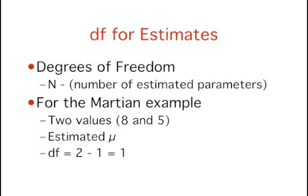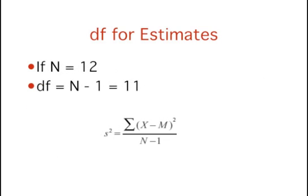In general, the degrees of freedom for an estimate is equal to the number of values minus the number of parameters estimated on the way to the estimate in question. In the Martians example, there are two values, 8 and 5, and we had to estimate one parameter, the population mean mu, on the way to estimating the population variance. Therefore, the estimate of variance has 2 minus 1, or 1, degree of freedom. If we had sampled 12 Martians, then our estimate of variance would have had 11 degrees of freedom. Therefore, the degrees of freedom of an estimate of variance is equal to n minus 1, where n is the number of observations.